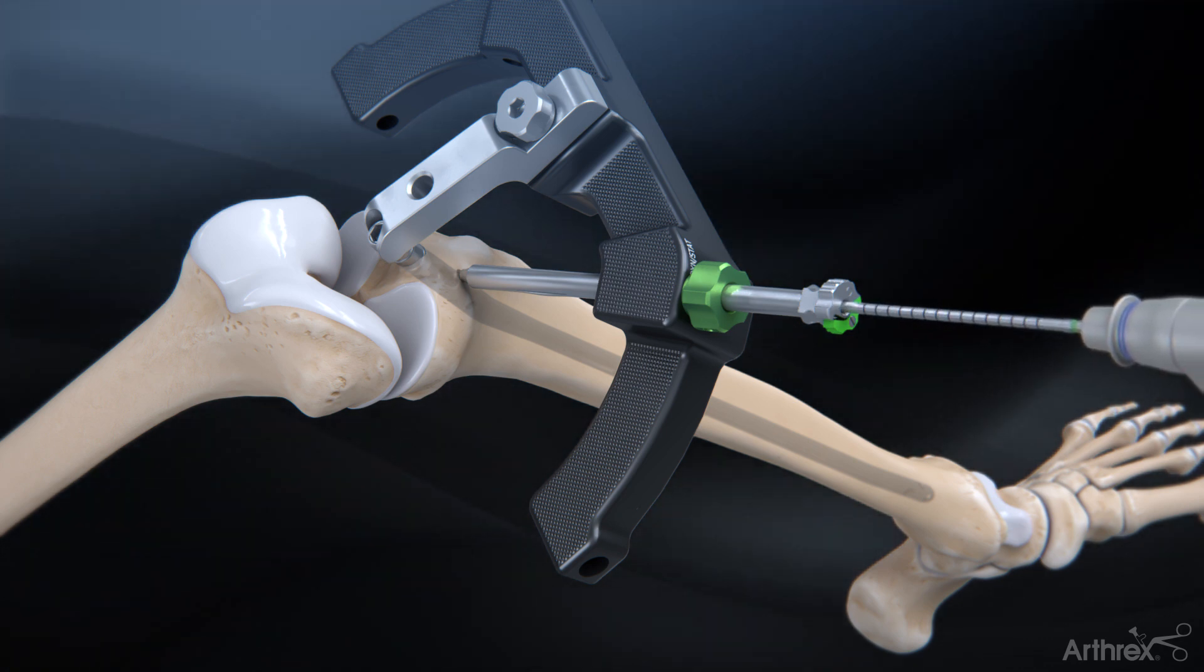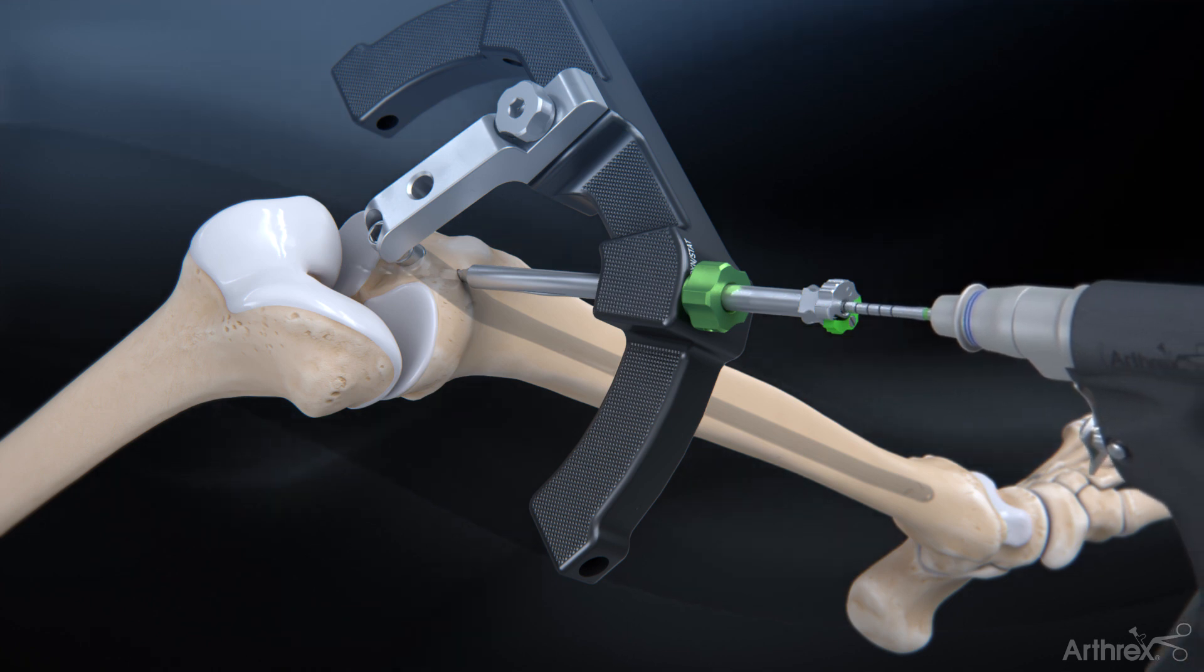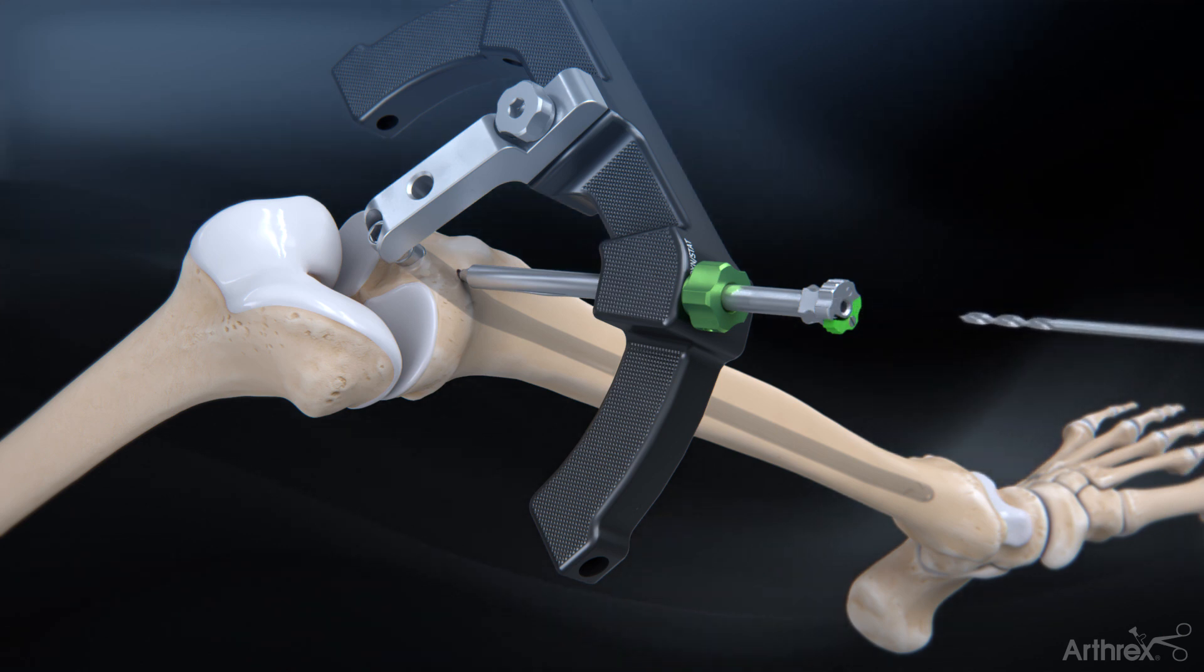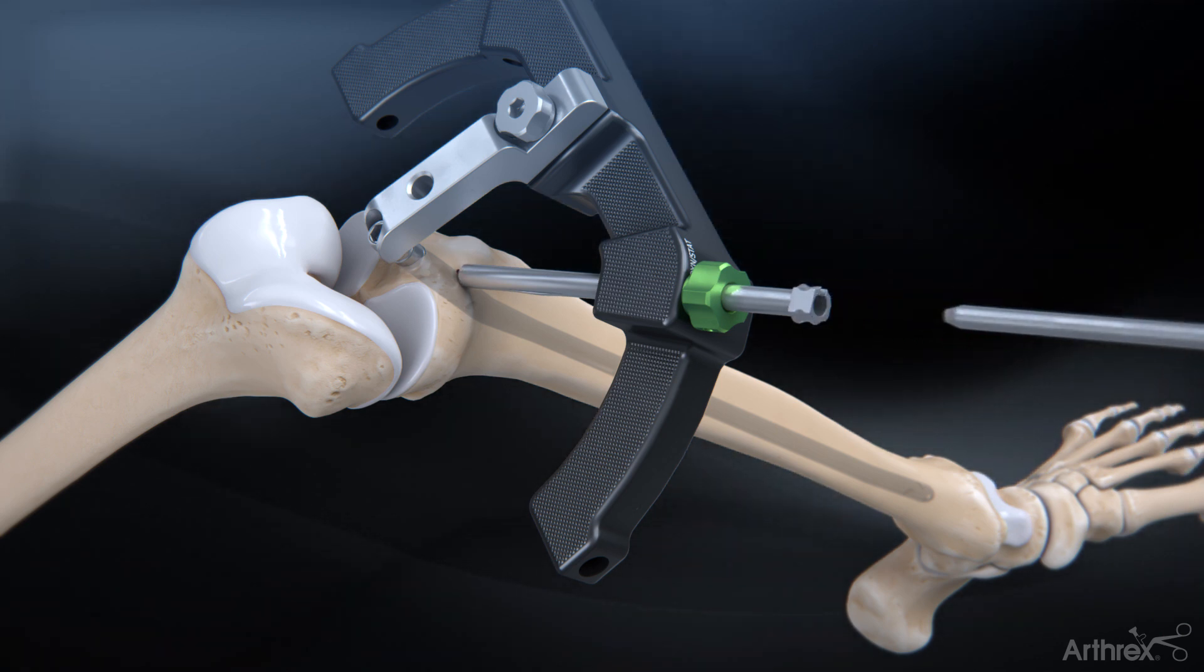Using the calibrated 4.0 mm drill, drill through the drill guide and sheath to the desired depth and measure using the calibrations on the drill bed. Next, remove the drill guide.